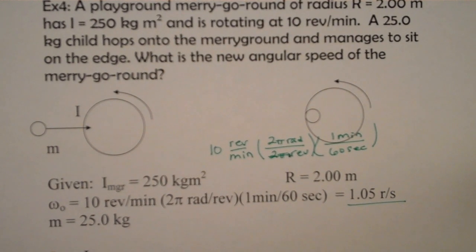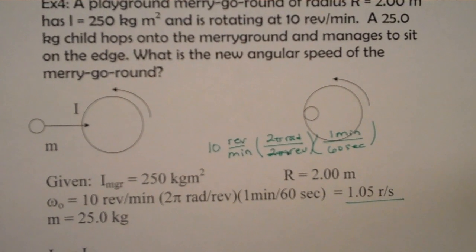This is a collision problem. We have an inelastic collision. Two objects joined together at the end. We know energy is not conserved, however momentum is. And in this case, angular momentum.